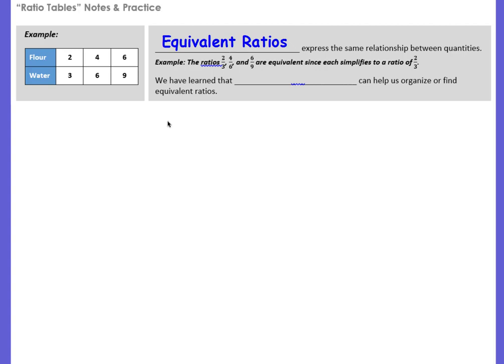Equivalent ratios express the same relationship between quantities. So for example, over here in our ratio table, we're comparing flour to water. And a ratio of 2 to 3 is equivalent to 4 to 6. A ratio of 2 to 3 is equivalent to 6 to 9. If you take these equivalent ratios and simplify them, you always go back to the simplified ratio of 2 to 3.